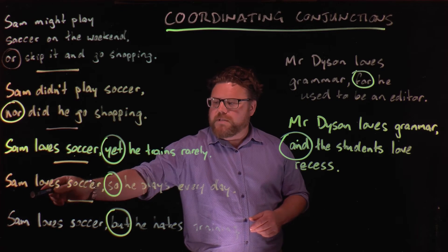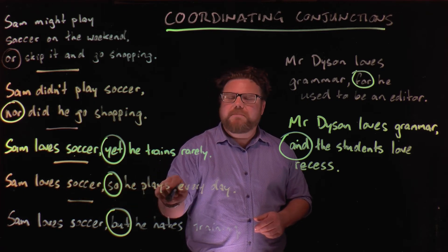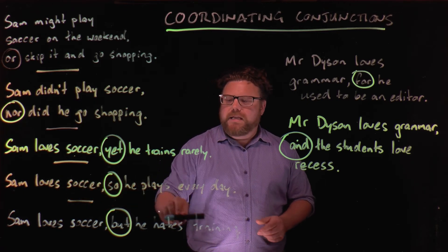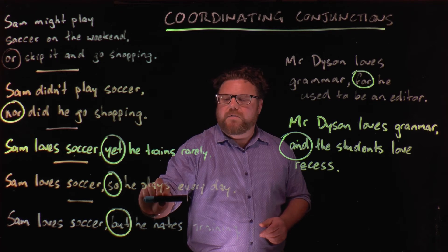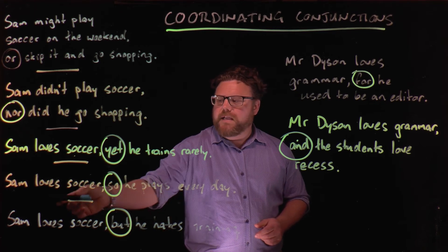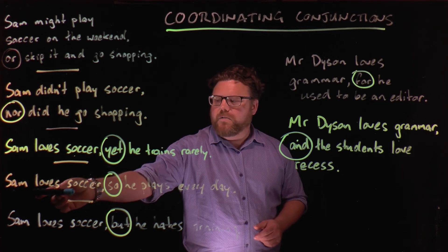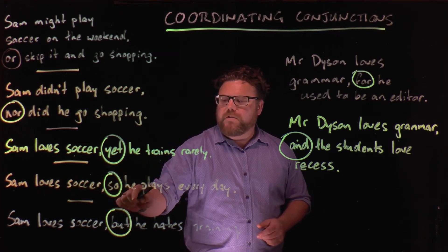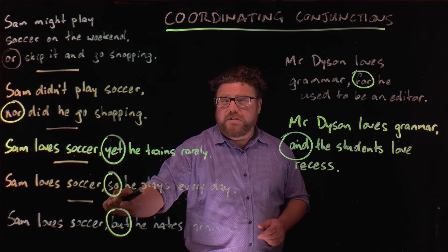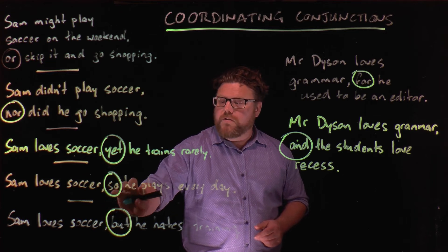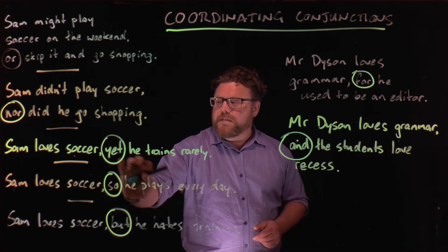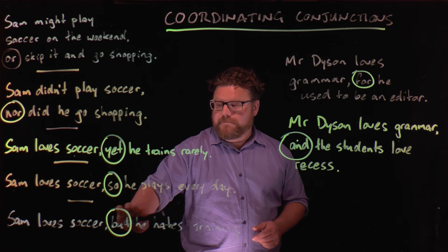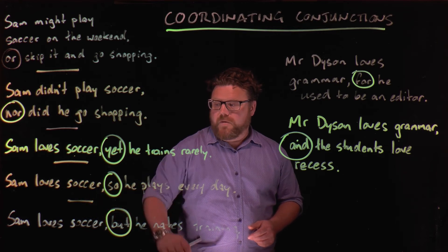Next we've got: Sam loves soccer, so he plays every day. The second independent clause is 'he plays every day' and the first is 'Sam loves soccer.' We've used the coordinating conjunction 'so' to show that the second thing happens because of the first, with a comma.